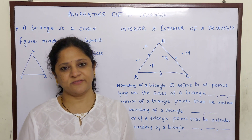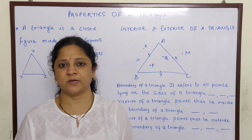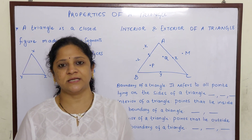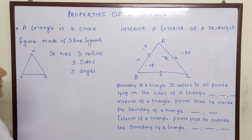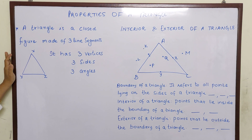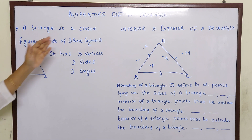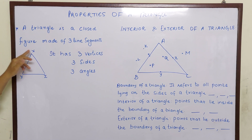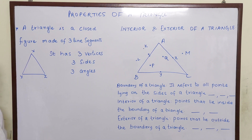Hello children. Today we are going to start with a new chapter: Properties of Triangles. Let us start. Now what is a triangle? You have already learnt in your previous classes. A triangle is a closed figure made up of three line segments. So you know this is a triangle.